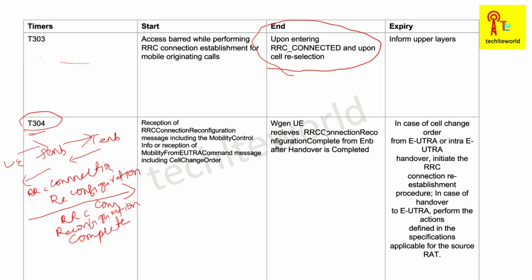Upon expiry of T304: in the case of a cell change order or intra-UTRA handover, the UE initiates the RRC Connection Re-establishment procedure. In the case of handover to UTRA, the UE performs actions defined in the specification applicable for the source RAT. In the case of handover to E-UTRA from another RAT such as 2G or 3G, the UE performs the actions defined in the specification for that particular RAT.